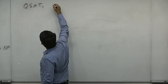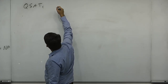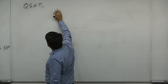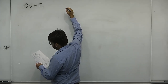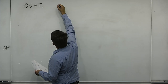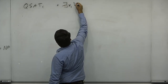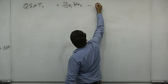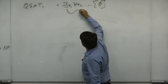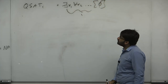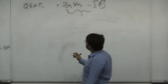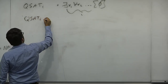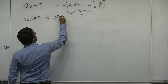QISAT is a subset of TQBF such that it only has a few quantifiers — like: there exists X1, for all X2, and you have a CNF with exactly I quantifiers. QISAT where the first quantifier is existential. It turns out that QISAT is Sigma-I-complete.